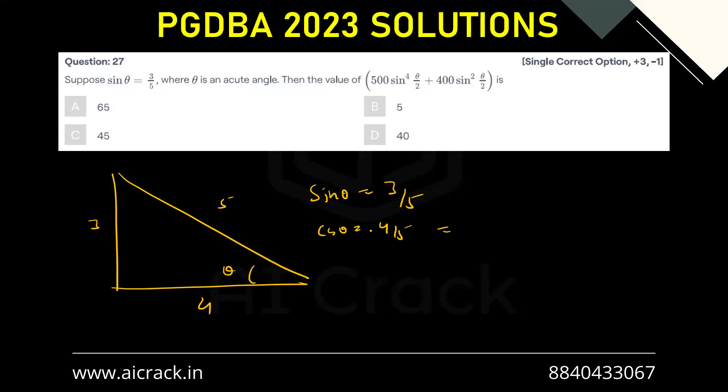Now cos theta equals 4 by 5 can be written as 1 minus 2 sine square theta by 2, the half angle formula. So that would give us 2 sine square theta by 2 equals 1 minus 4 by 5, that would be 1 by 5. That gives us sine square theta by 2 equals 1 by 10.